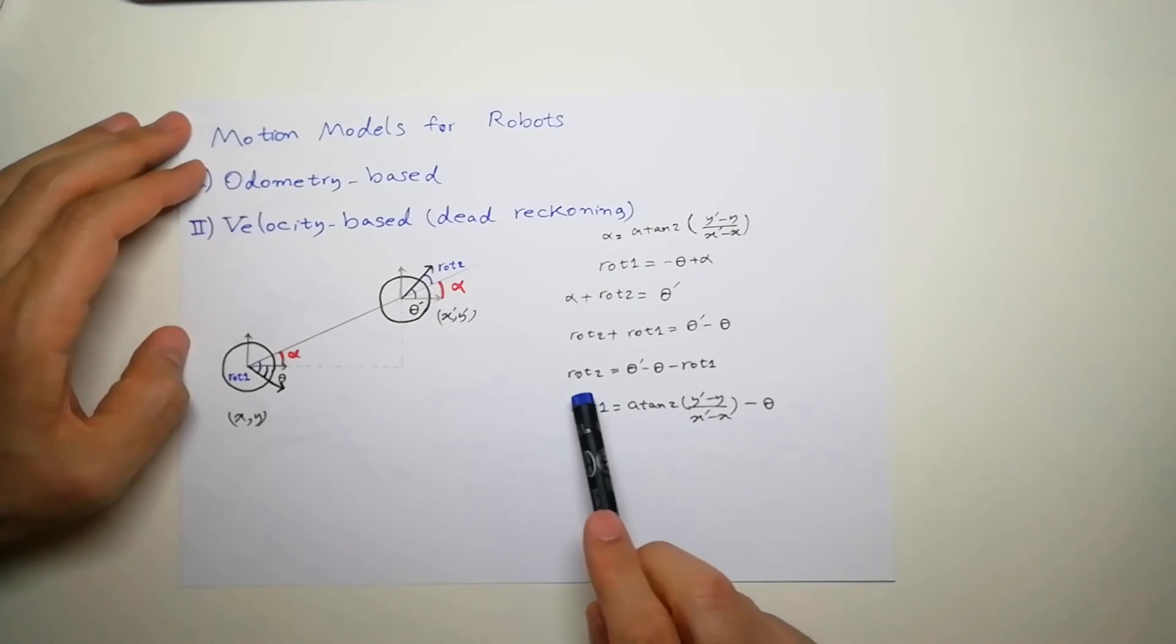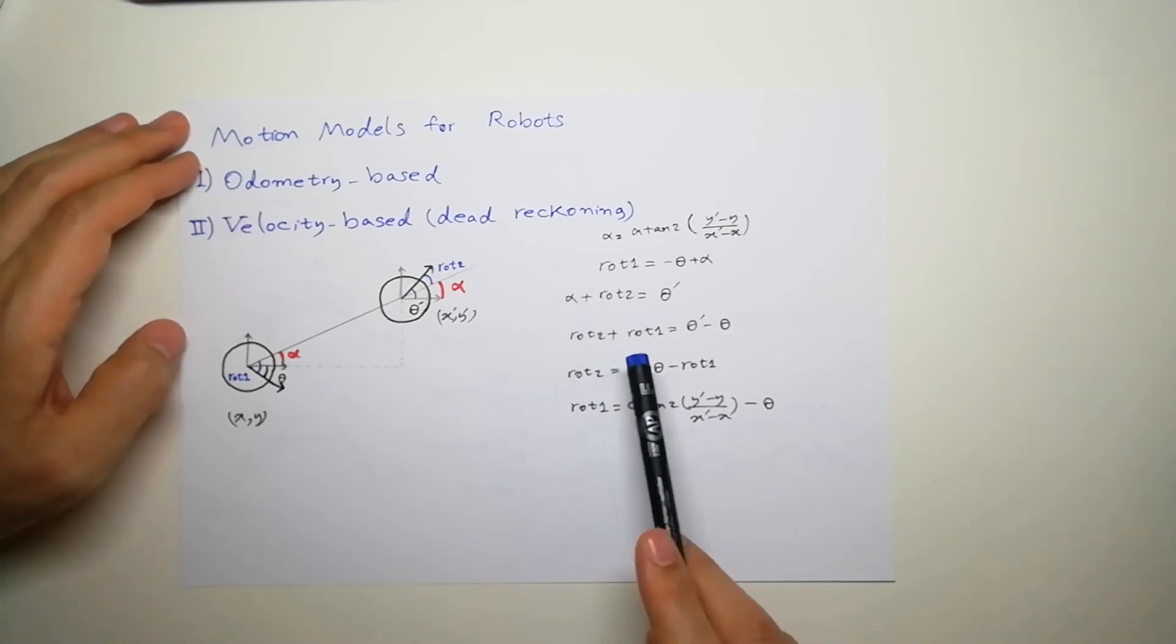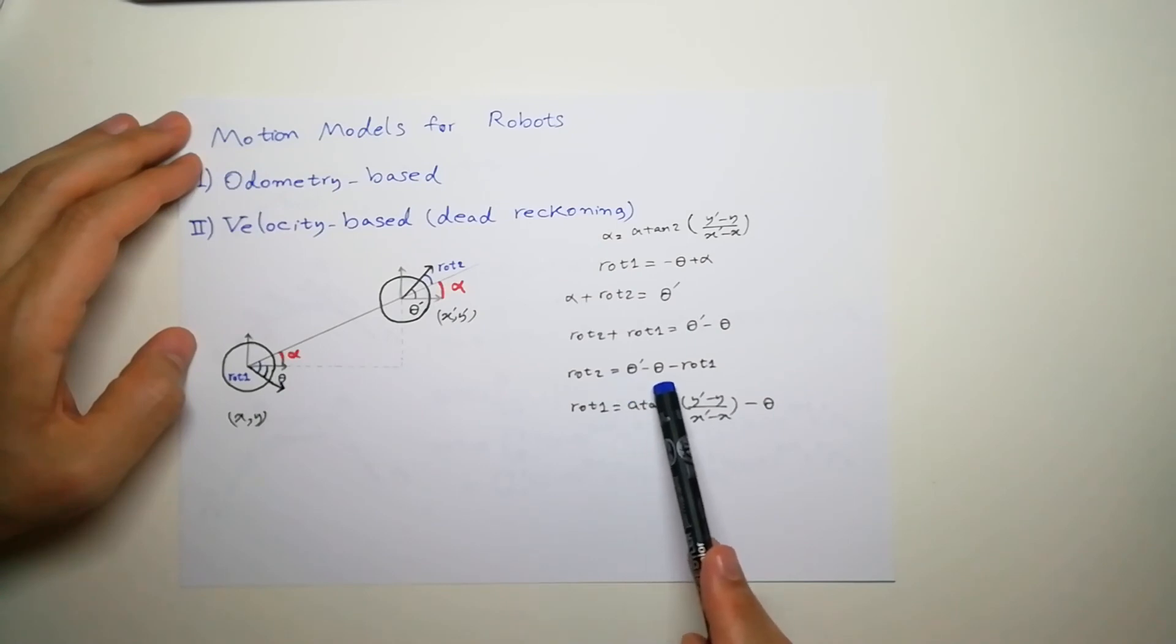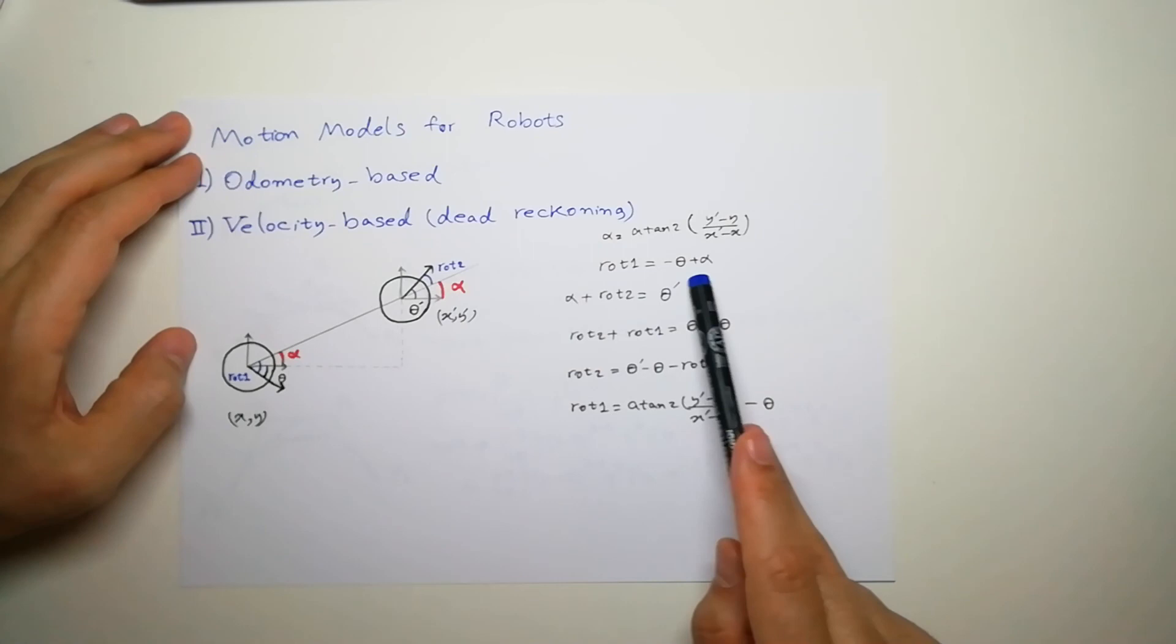So, this is rotation 1, and rotation 2, as I said, if we sum these two equations, we get this one. Rotation 2 plus rotation 1 is theta prime minus theta, and we can see rotation 2 is theta prime (new heading) minus old heading minus rotation 1, and rotation 1 we can get from this equation.